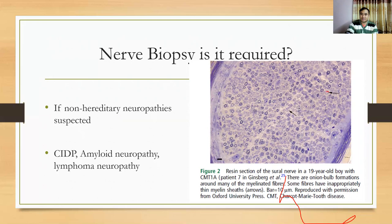On nerve biopsy in CMT, you can see an onion skin pattern. This onion skin pattern is also seen in CIDP, but in CIDP there is macrophage invasion. This is how we can differentiate the nerve biopsy findings of CIDP from those of Charcot-Marie-Tooth disease.